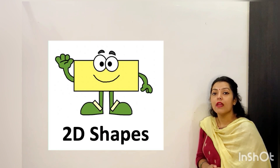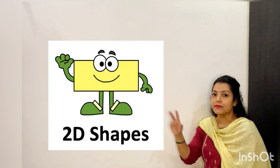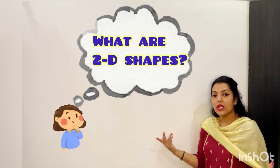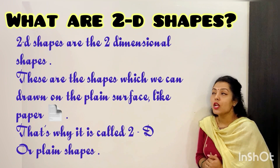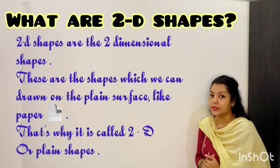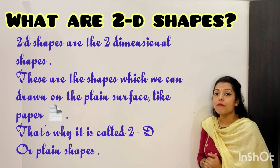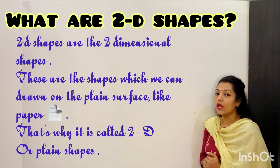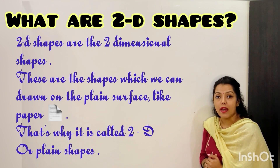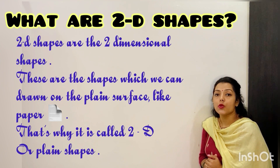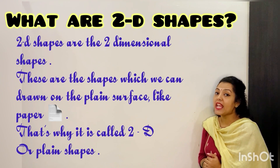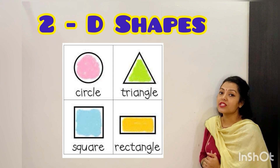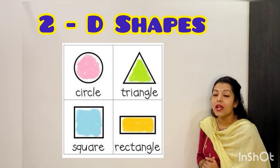But today we will learn about 2D shapes. So you must be wondering what are 2D shapes? 2D shapes are two dimensional shapes. These are the shapes which we can draw on a plain surface or on a flat surface like paper. That's why it is called a 2D shape or plain shape. So circle, triangle, square, rectangle — these all are 2D shapes.